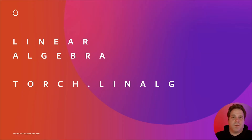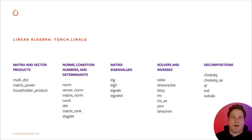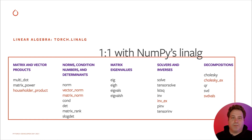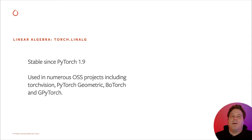Now let's talk about the second scientific computing module added this past year, Torch.Linalg, a linear algebra module modeled after NumPy's Linalg module. Torch.Linalg has hardware-accelerated linear algebra operations to do everything from computing condition numbers to solving systems of equations. Just like Torch.FFT, Torch.Linalg implements a superset of NumPy's linear algebra functionality. These consistencies between PyTorch and NumPy should make the modules easy to use for community members already familiar with NumPy — you can pick them up quickly and use them as a drop-in replacement in your existing programs. Torch.Linalg has been stable since PyTorch 1.9 and is already used in numerous open source projects, including TorchVision, PyTorch Geometric, BoTorch which supports Bayesian optimization, and GPyTorch which supports Gaussian processes.